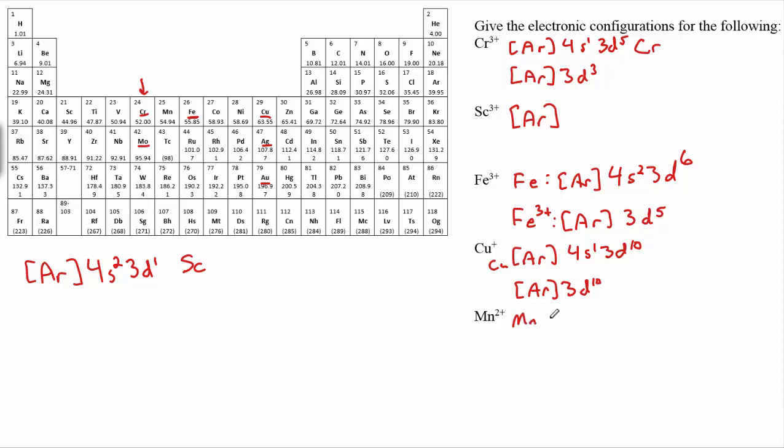Finally, manganese 2+. If we start with just plain old manganese, manganese would be argon again, 4s2. Here's manganese right here, and so 3d one, two, three, four, five. So if we've got manganese 2+, now we've got to remove two electrons. We'll take away those two 4s's and we'll be left with argon 3d5.